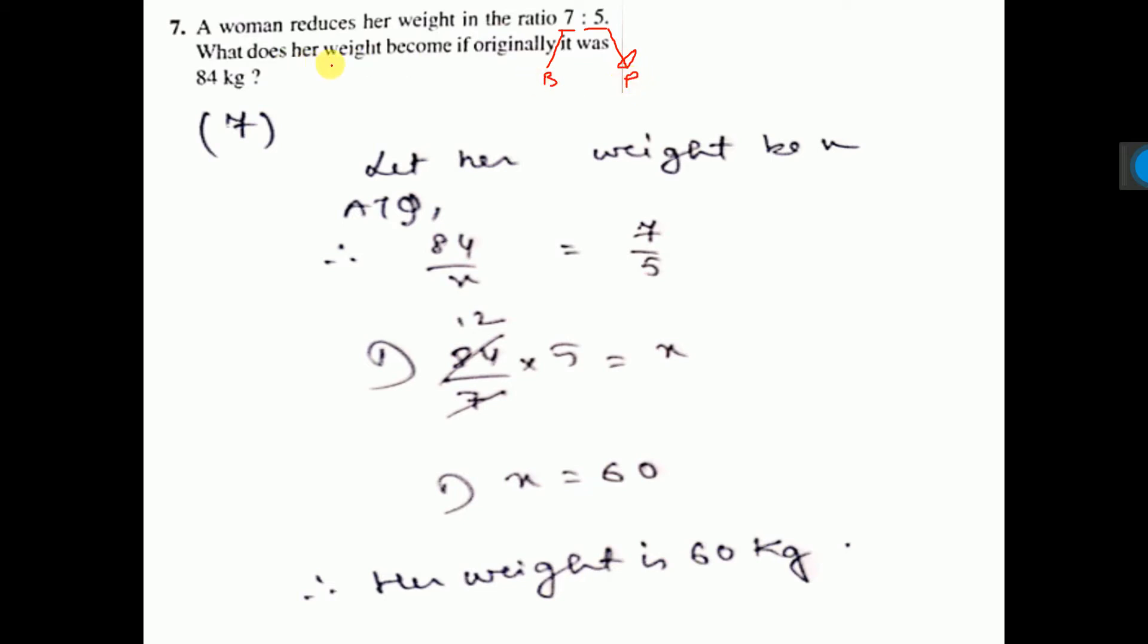What does the weight before, original weight? That is, present weight is 84. So what does her weight become if originally it was 84 kg? So 84 it was before. It was means it was before only. So we have to find present.